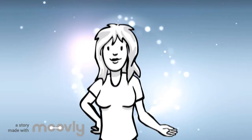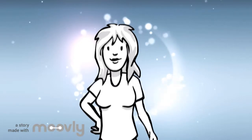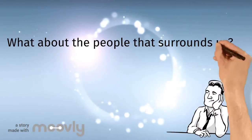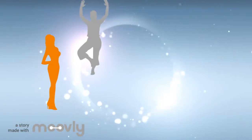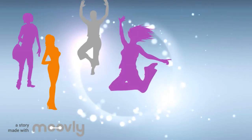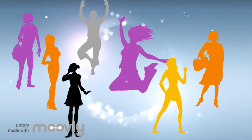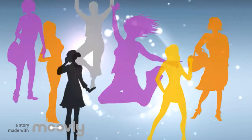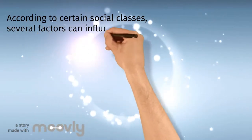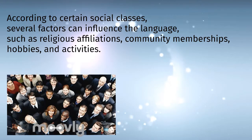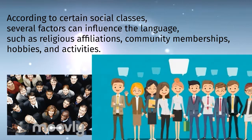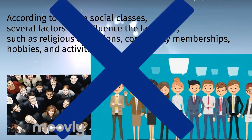Now that we know gender may change some things, what else could change our perception of language? What about the people that surround us? Are social status and social groups relevant within sociolinguistics? It is difficult to define class as a factor that influences language, since class is subjective. According to certain social classes, several factors can influence language, such as religious affiliations, community memberships, hobbies, and activities. As a consequence, people within social groups may appear similar in several aspects including language use. Nonetheless, every individual differs in language use because each person has a unique dialect independent of where they are from or where they were raised.